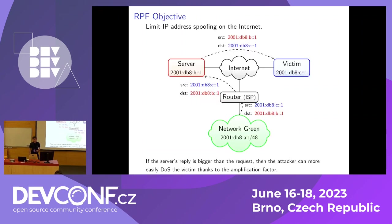and it will verify that the source IP address of the packet actually belongs to NetworkBlue and not NetworkRed. The objective is to limit problems caused by IP address spoofing on the internet. For example, here we have an attacker inside NetworkGreen, and this attacker wants to attack the victim in blue. So it sends a packet to the server in red,